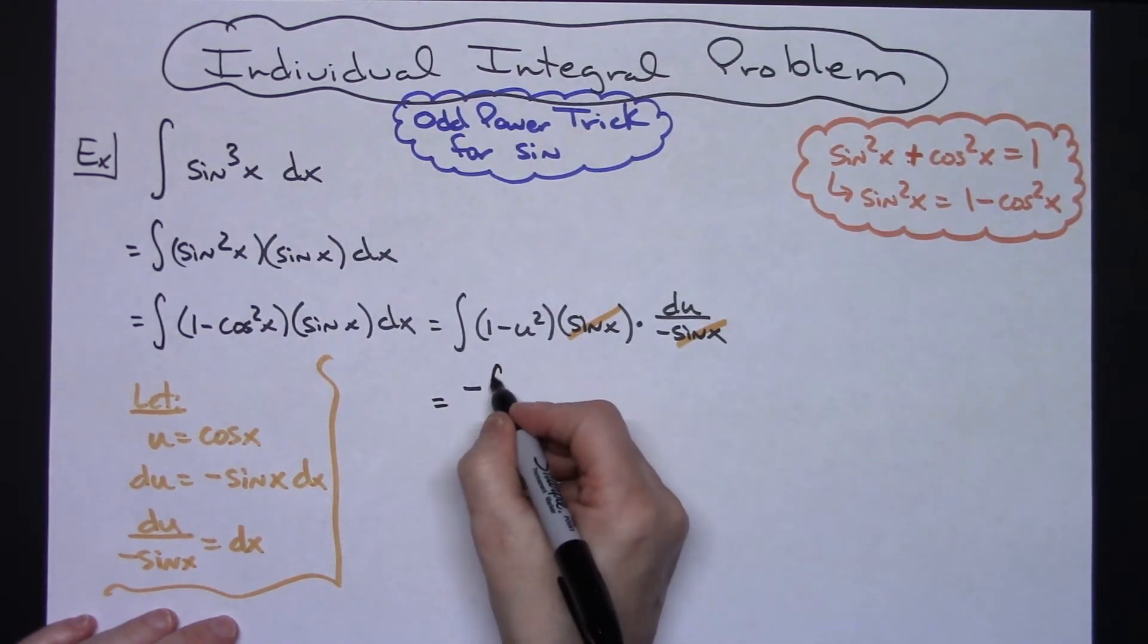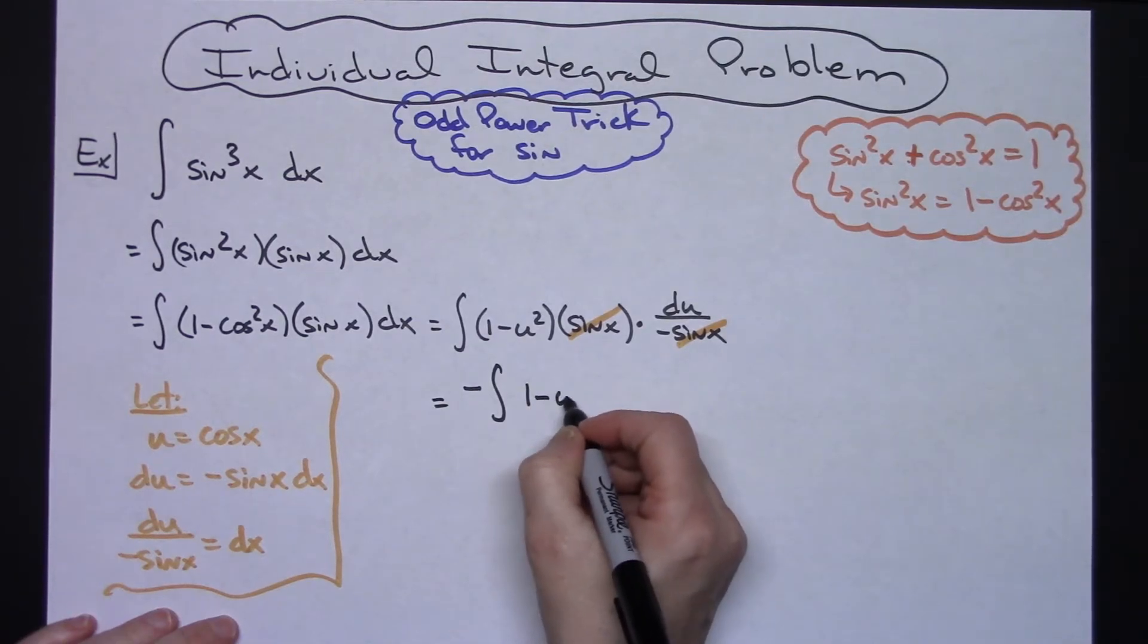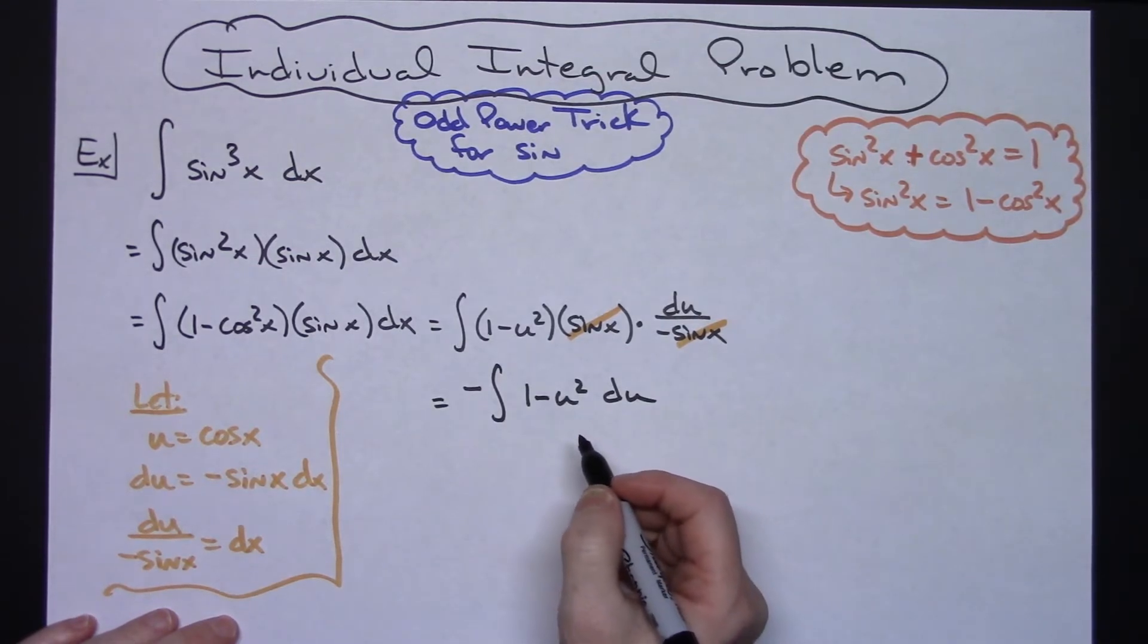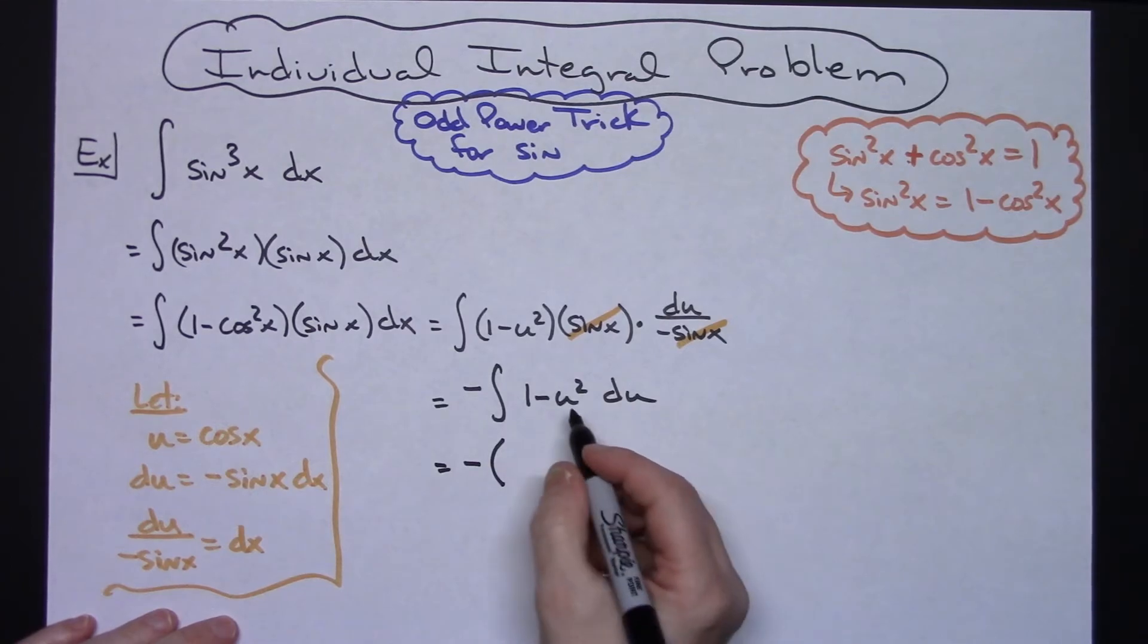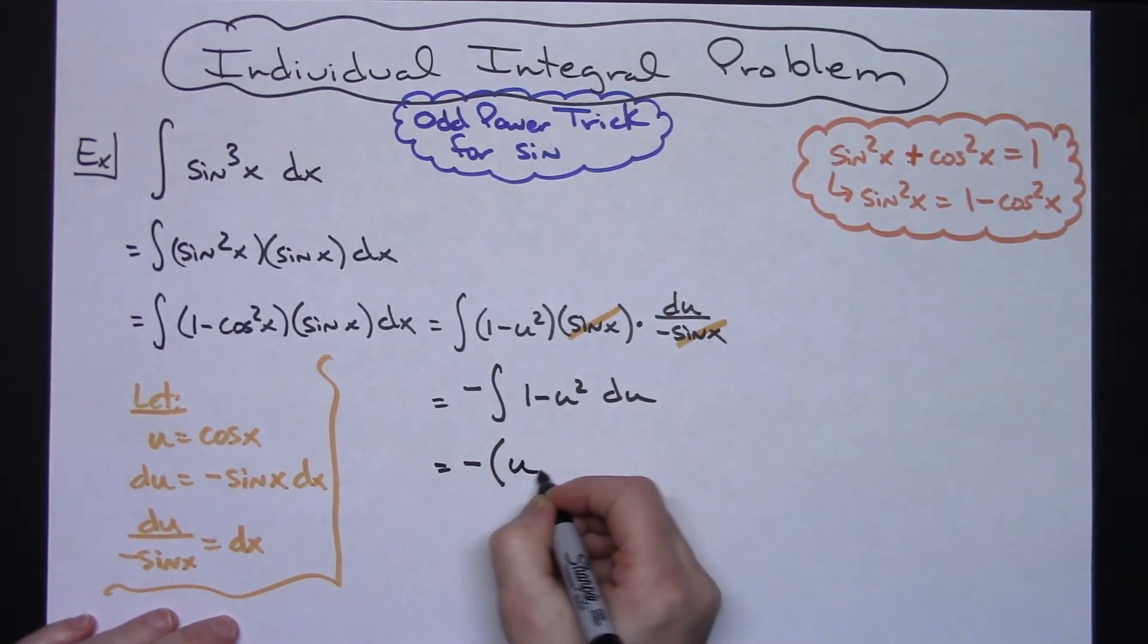Pull the negative out, I would have the integral of 1 minus u squared du. Both of those are going to integrate really easily here. So I'll have the negative out in front. Let's put parentheses in there since I have two things inside. When I integrate 1, I'm going to get a u.